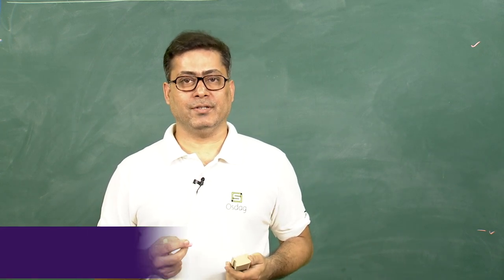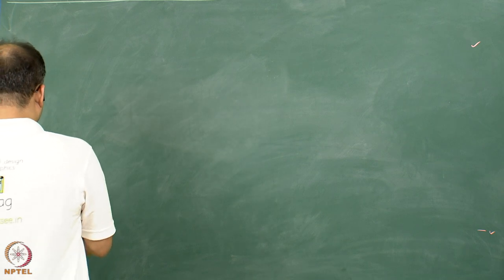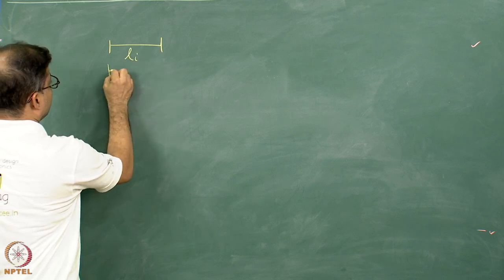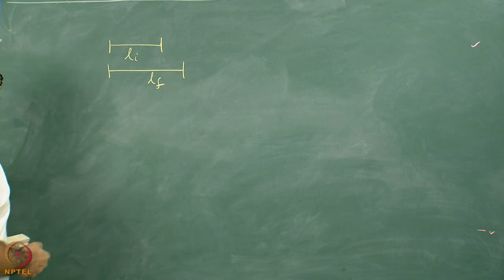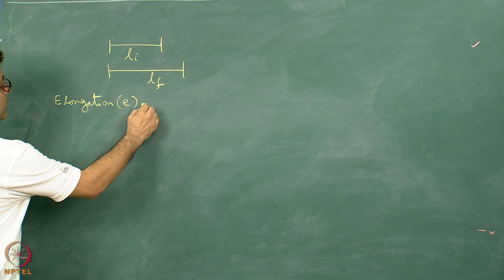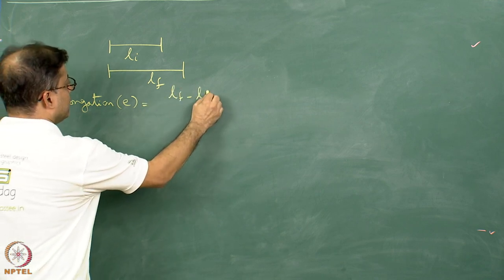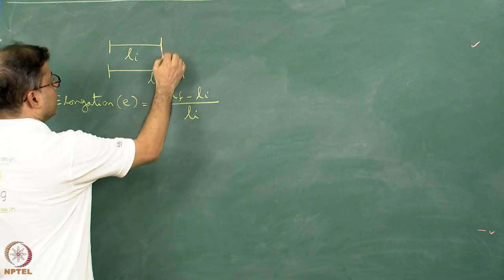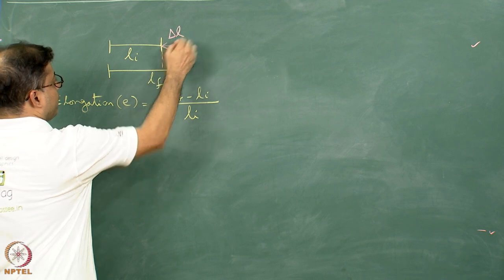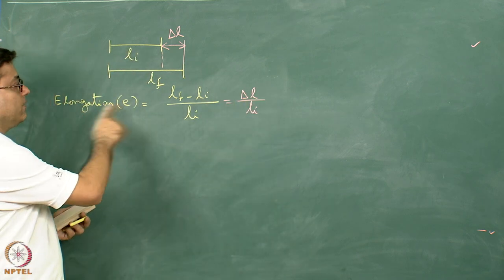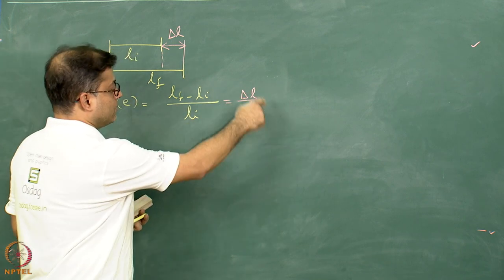We are going to see the different strain parameters today, which will be useful in subsequent lectures. Consider a line of length L initial; due to deformation, the length increases to L final. We define elongation E as L final minus L initial divided by L initial, which can also be written as delta L by L initial. Since it is length divided by length, elongation is unitless.